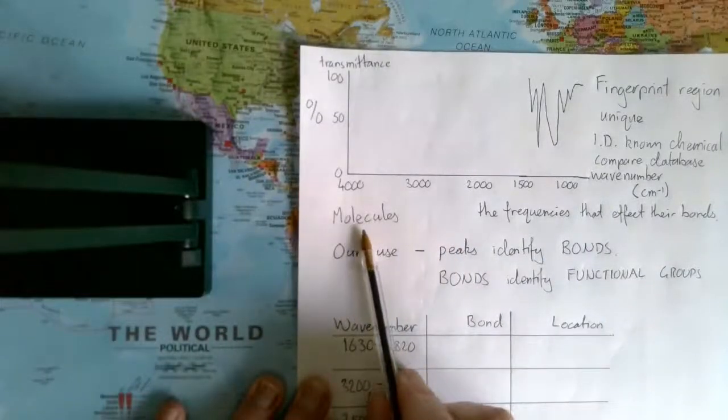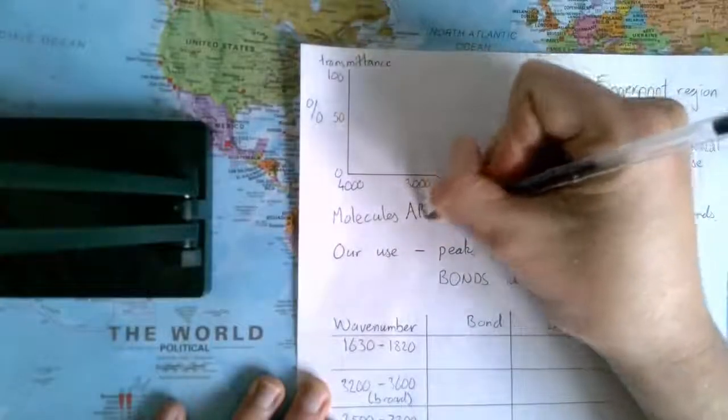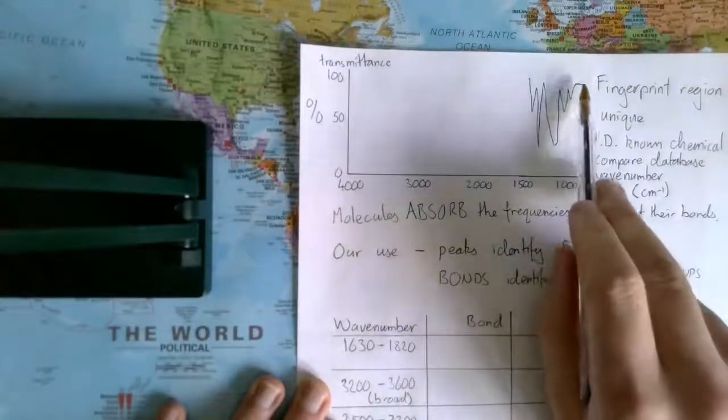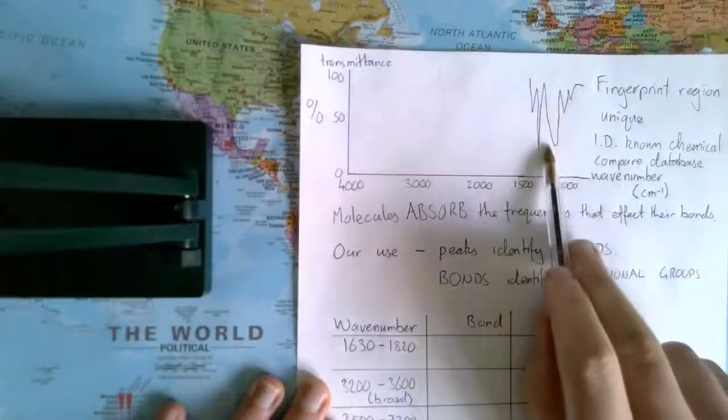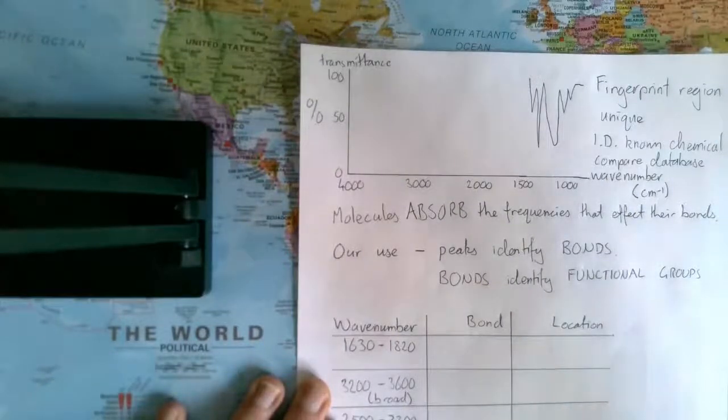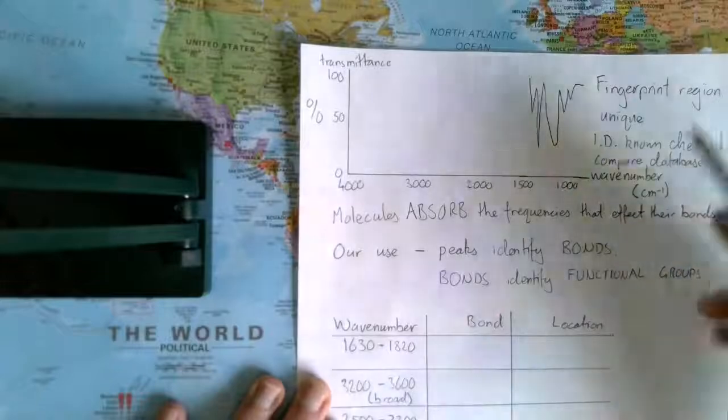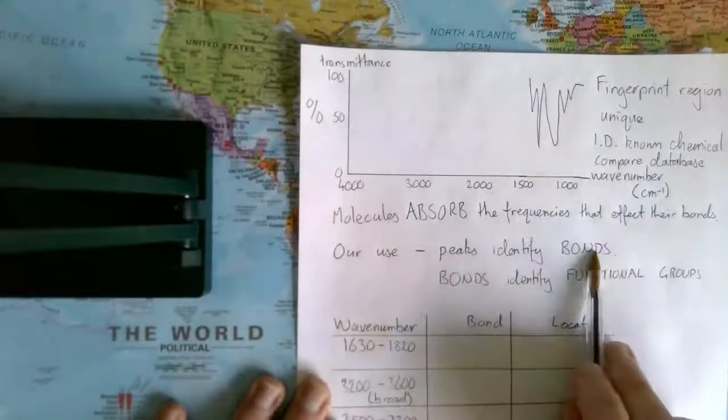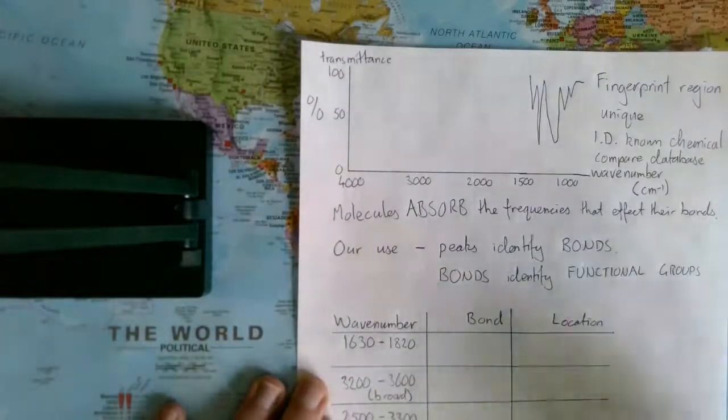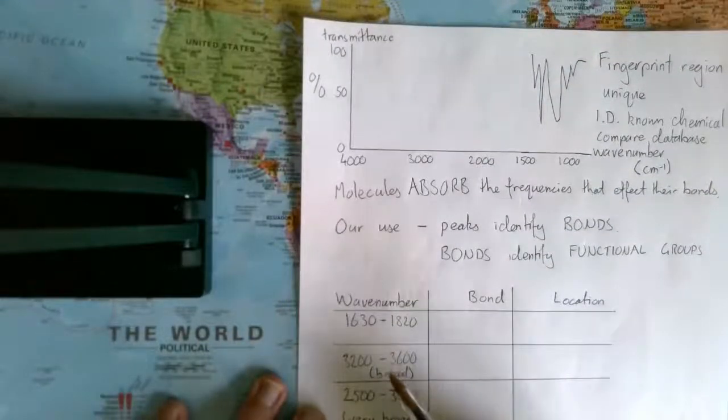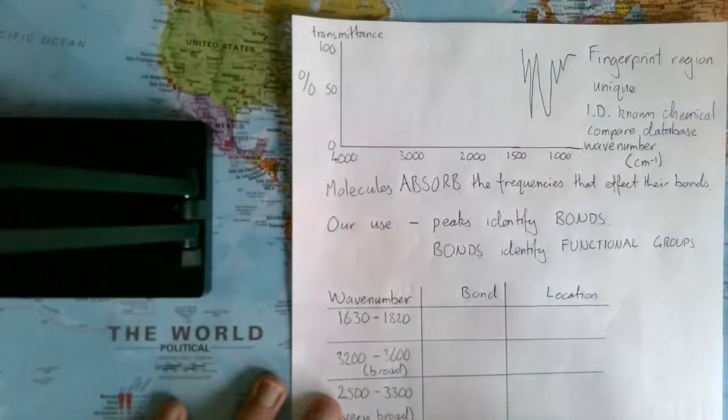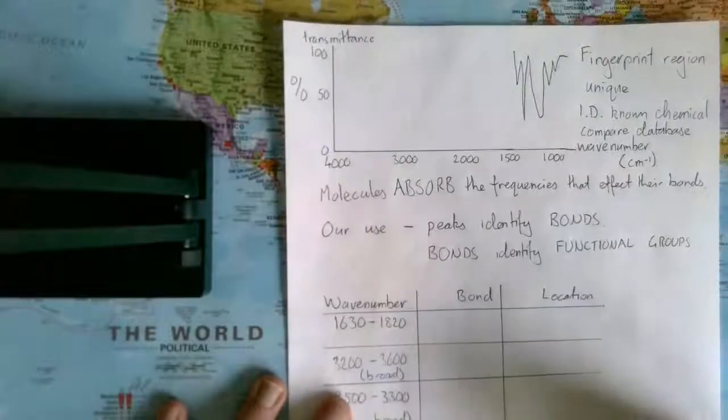The key bit I'm going to go onto now. Molecules absorb the frequencies that affect their bonds. For this molecule I've started drawing, it doesn't go along at 100%, but you can see each of these points would link to one or other of their bonds. The main use for us is to know that these peaks will identify the bonds, and therefore the bonds will identify the functional groups. All of the wavenumber ranges for each type of bond are given to you in the data sheet. You do not need to learn these numbers, but you need to learn how to use them.